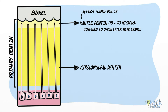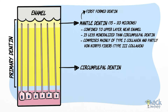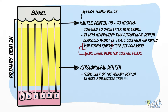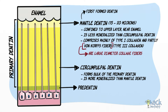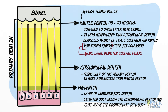The mantle dentine layer is less mineralized than the circumpulpal dentine. The mantle dentine matrix comprises mainly type 1 collagen and partly Von Korff's fibers, comprising type 3 collagen. Von Korff's fibers are large-diameter collagen fibers, larger than most collagen fibers in the rest of the dentine. The circumpulpal dentine forms the bulk of the primary dentine and is more mineralized than the mantle dentine. There is also a small layer of pre-dentine that is unmineralized, situated below the circumpulpal dentine but just above the odontoblast cell bodies.